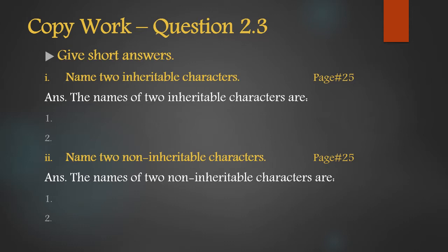Let's start today's lecture with the exercise of Chapter 2. Question 2.1 — MCQs, choose and circle the correct option — and question 2.2 — match the words of Column A with Column B — were solved last lecture. Question 2.9, identify and label the diagram, was also done. Today we start from question 2.3, which is copy work: give short answers. There are 5 short answers to solve in your copies.